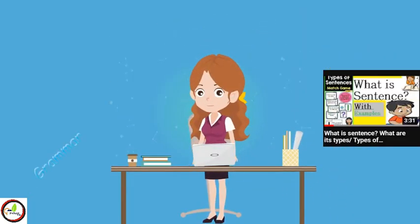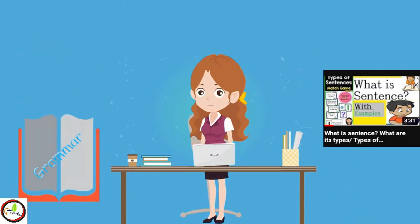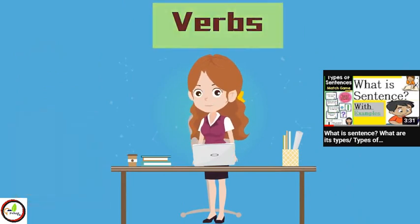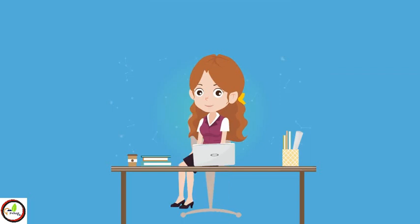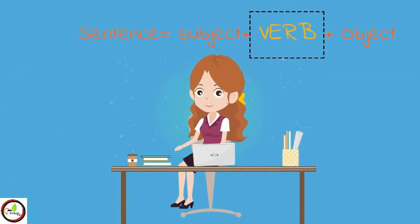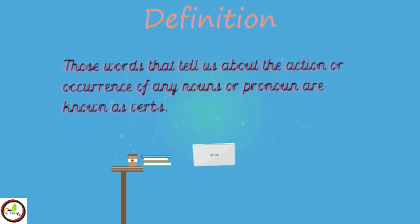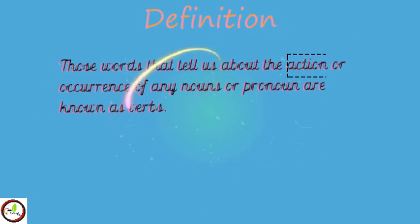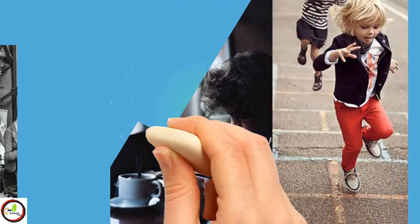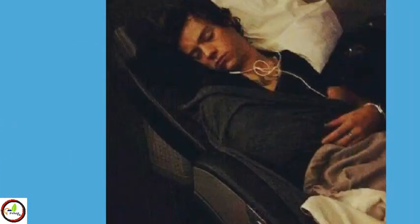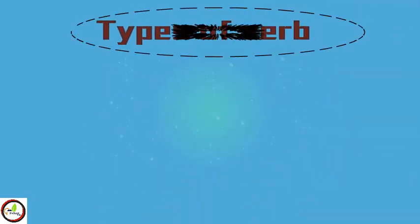Welcome everyone. In this video we will discuss an important topic of grammar: verbs. In our previous video we learned about sentences. As we know, to form a sentence, a verb plays a vital role. Those words that tell us about the action or occurrence of any noun or pronoun are known as verbs. Any word that shows action, like reading, writing, playing, sleeping, etc., can be termed as a verb. Now let's look at the types of verbs.